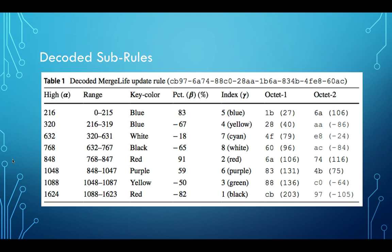So using all of this, we can now get to that table that I originally showed you. So this is the expanded update rule. And you can see one of these for any of these by looking at the MergeLife website that I have that has a JavaScript decoder. So now that we have this, let's see how we can actually transform one pixel into the next.